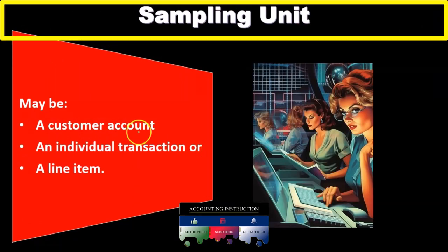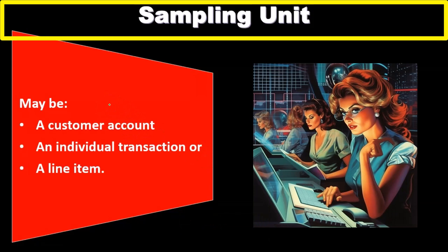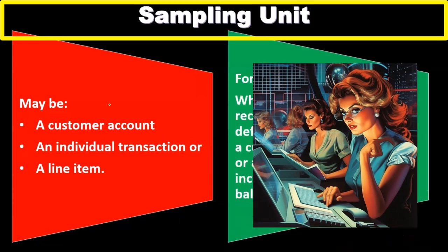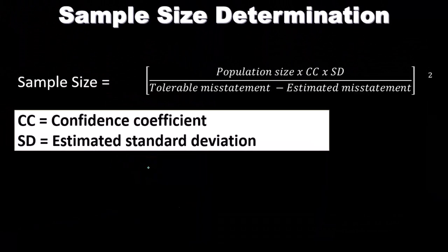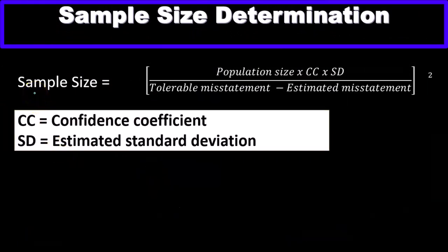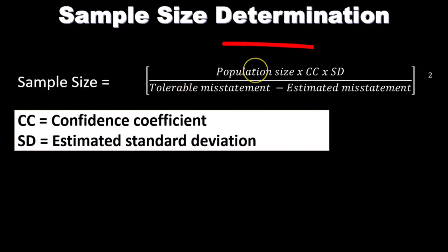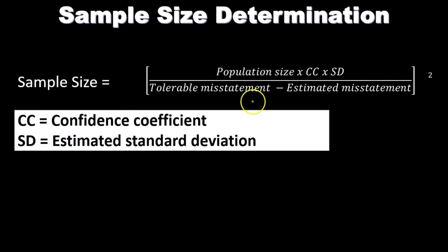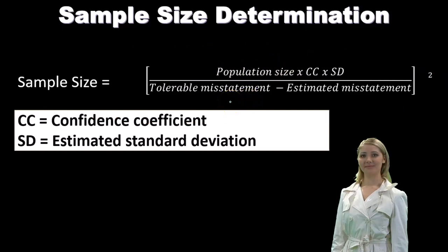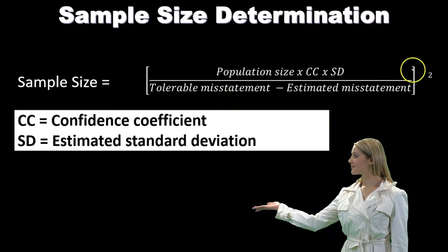Regarding the sampling unit: it may be a customer account, an individual transaction, or a line item. For example, when auditing accounts receivable the auditor may define the sample unit as the customer's account balance or an individual sale invoice included in the account balance. For sample size determination, the formula uses CC as the confidence coefficient and SD as the estimated standard deviation: sample size equals the population times CC times SD, divided by the quantity tolerable misstatement minus estimated misstatement, all squared.